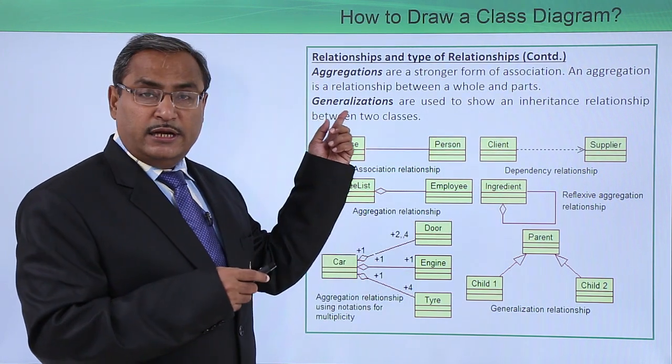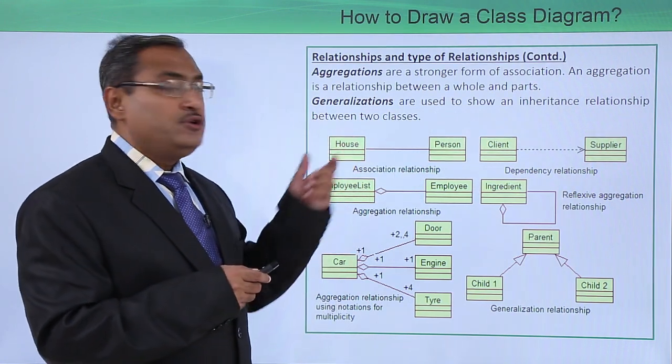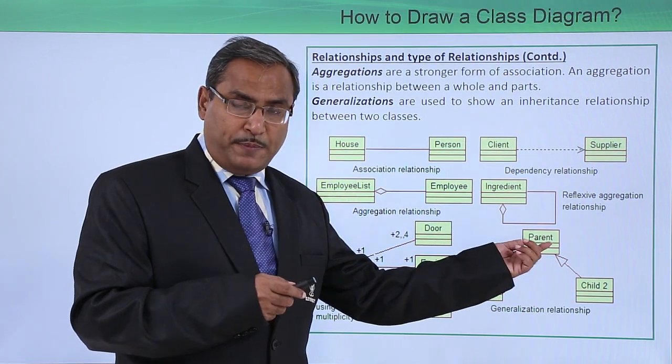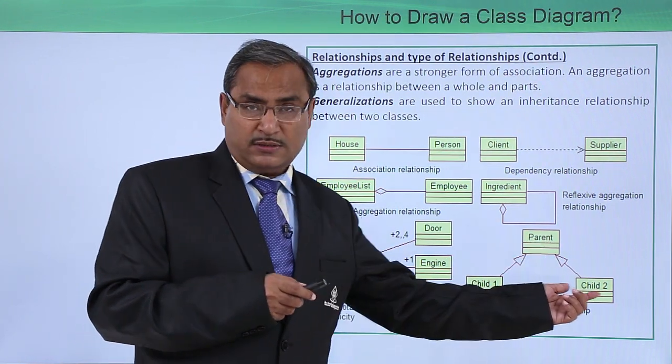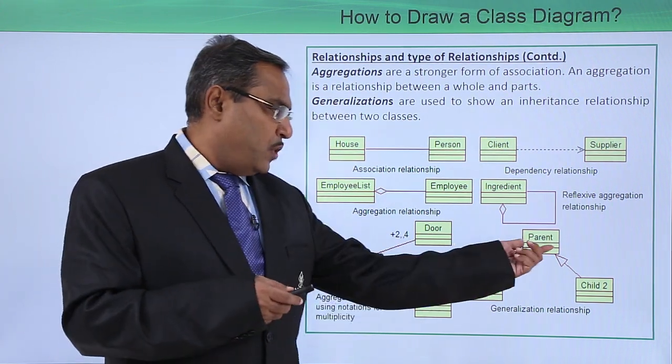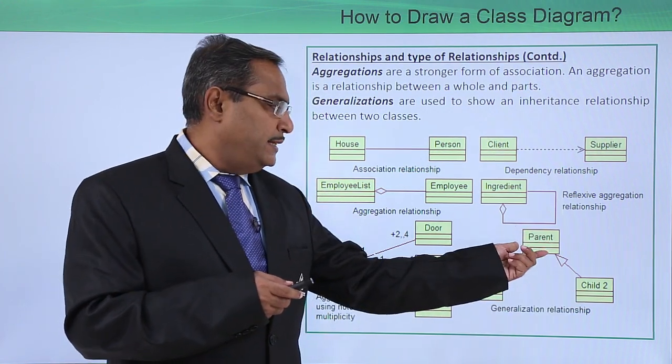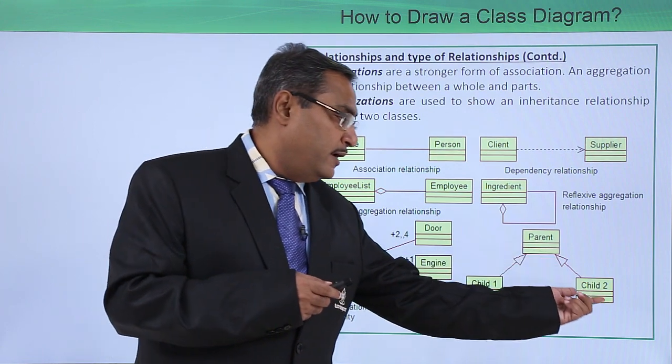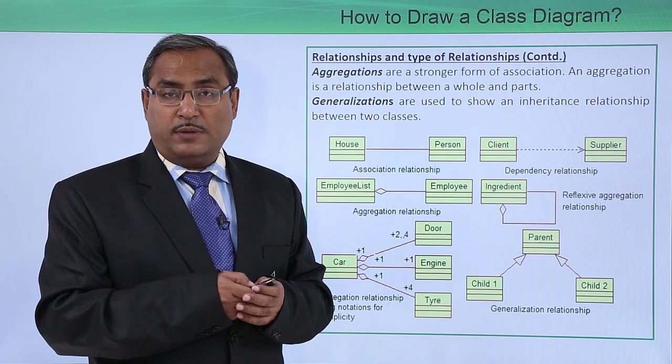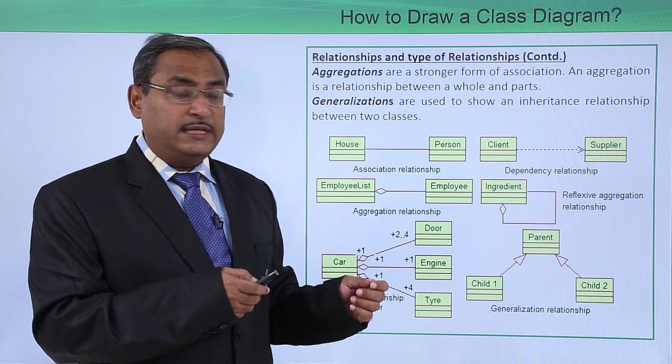So here we are having another relationship, that is the generalization. Are used to show an inheritance relationship between two classes. Just consider this one. This is the parent class. And this particular parent class is having two child classes, also known as the subclass or derived class or inherited classes. So these properties will be inherited onto this child 1 and child 2. Those properties which are there in this parent, some of the properties might be, so they have got inherited on this child 1 and child 2. And child 1 and child 2 may have some other extra properties. So that sort of relationship we can also depict using this class diagram.